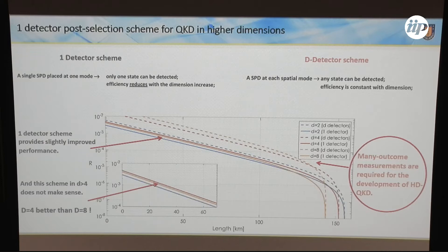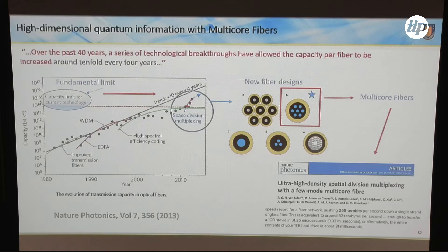So we need to develop detection systems that allow us to get measurement-complete measurements, where we can truly achieve the potential of high-dimension quantum communication. The technology we are using is based on multicore fibers. I like very much this figure — it shows how the amount of information we send through a single-mode fiber has increased over the past few years. It's amazing: every four years we get ten times more information transmitted through a single-mode fiber. Probably today you pay the same as five years ago for your internet connection, but it's much faster — this is a consequence of this progress.